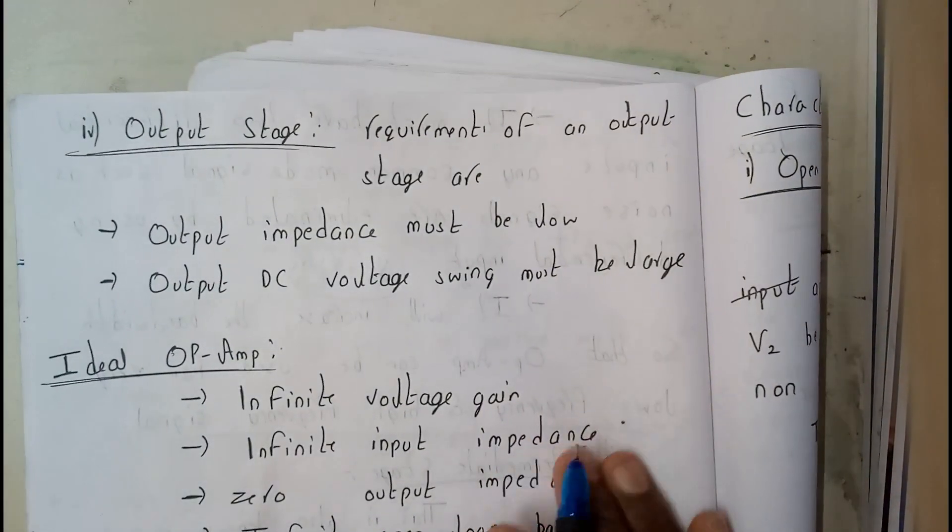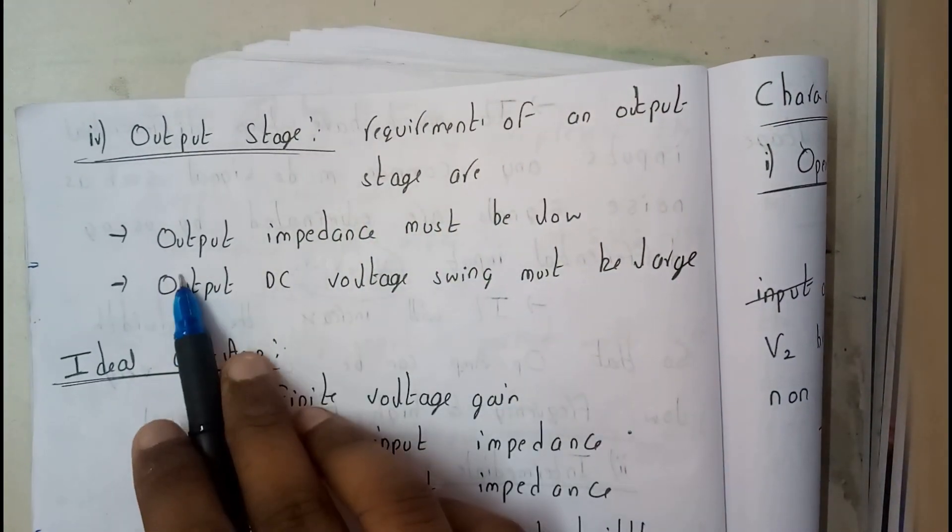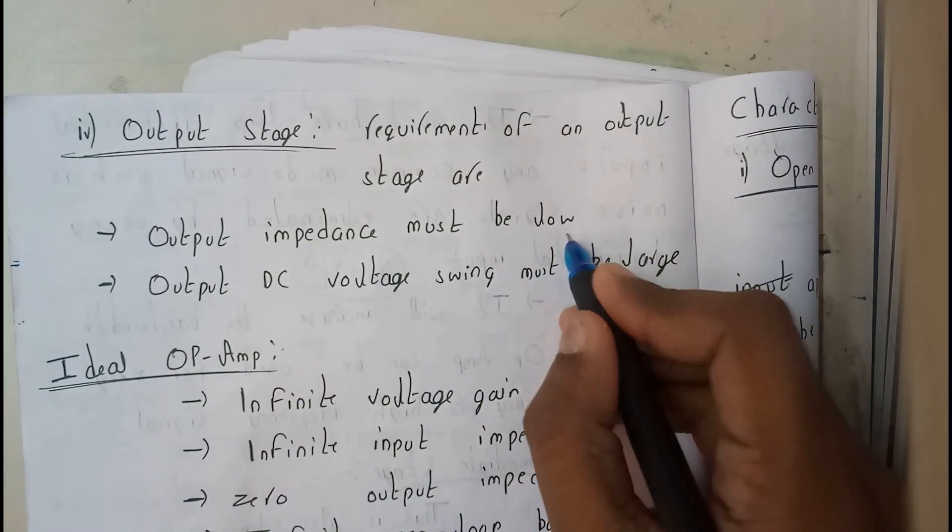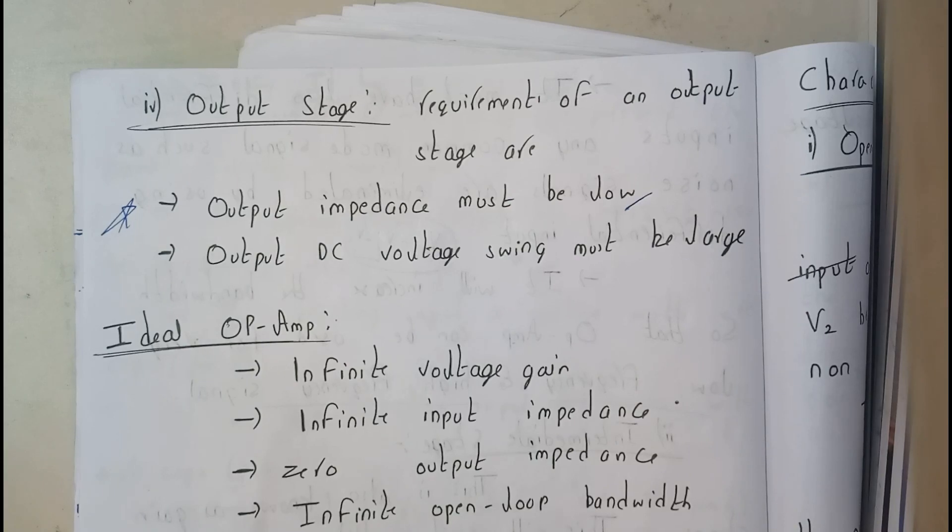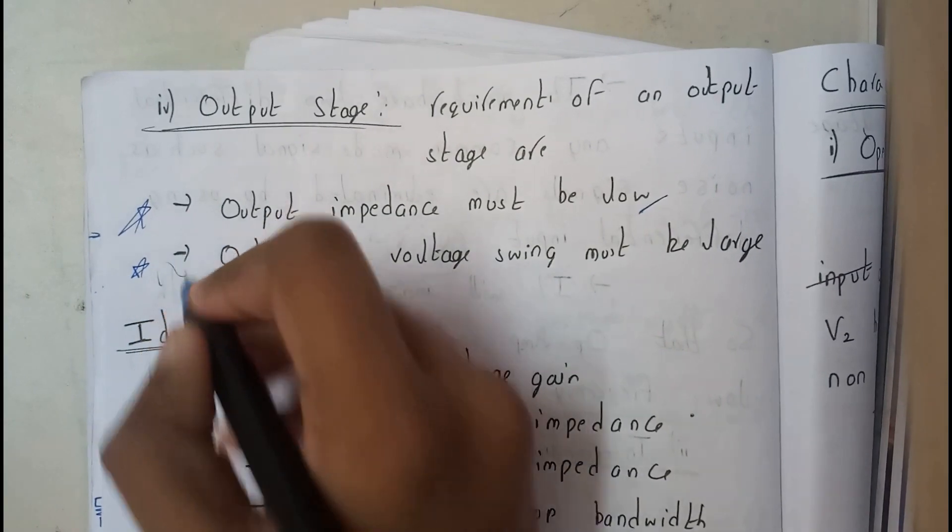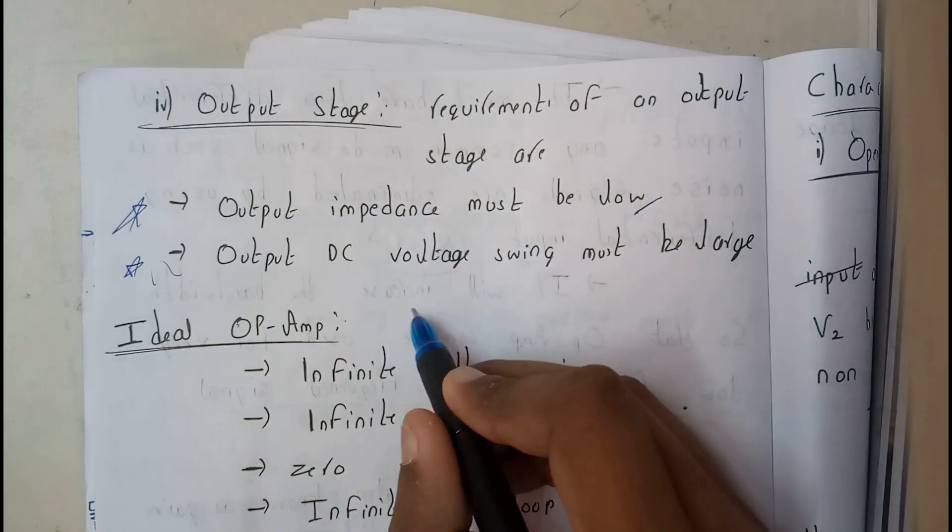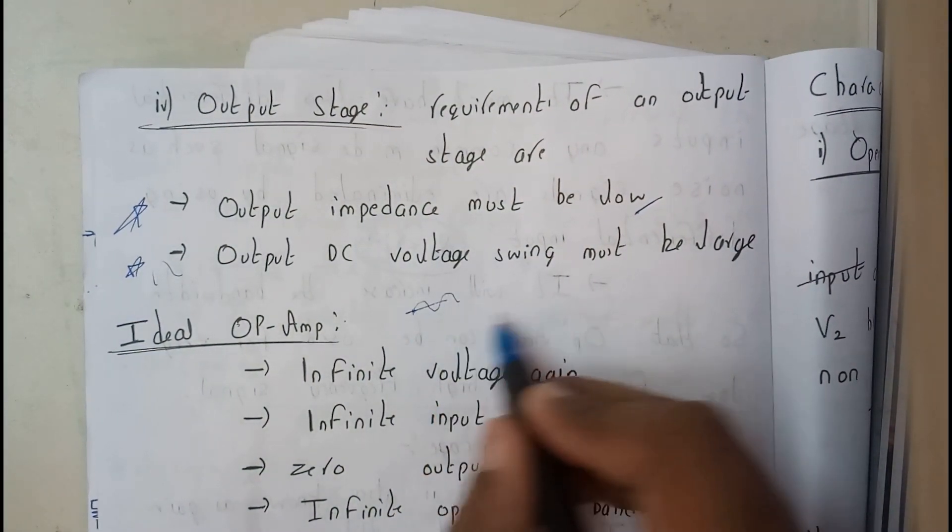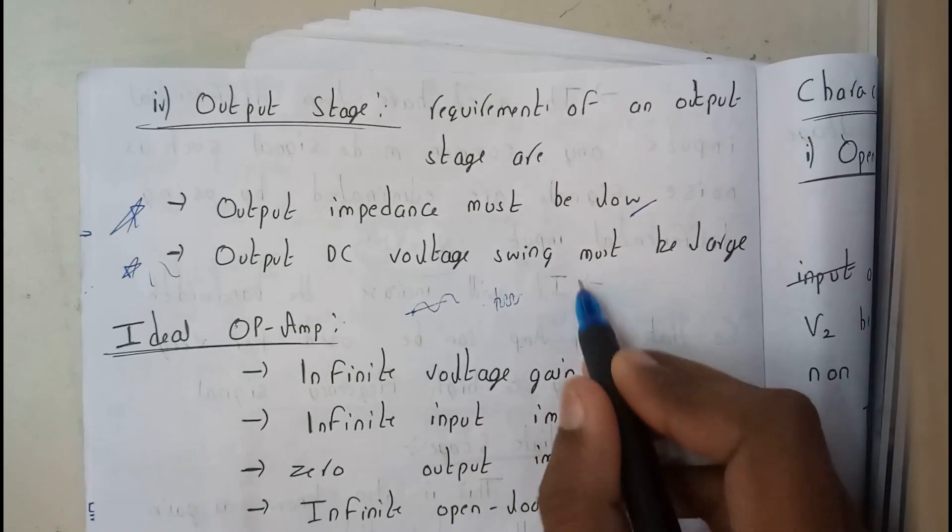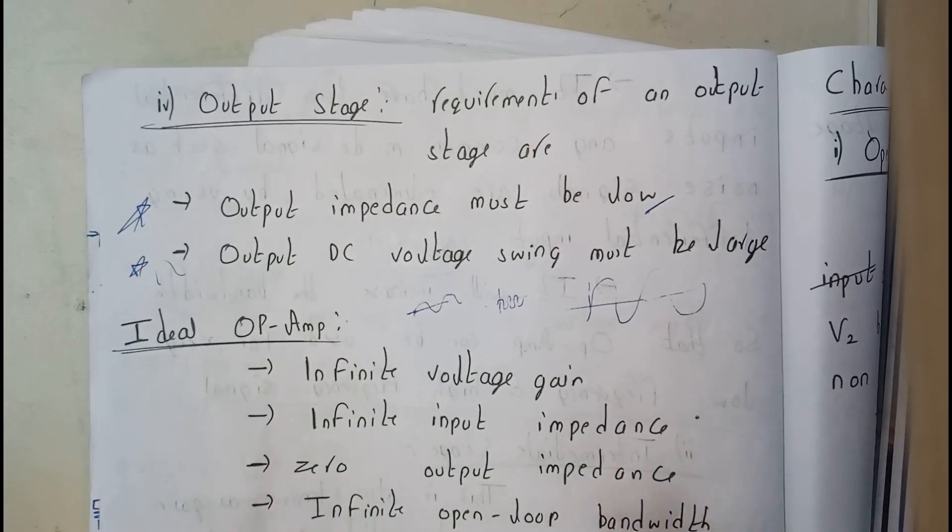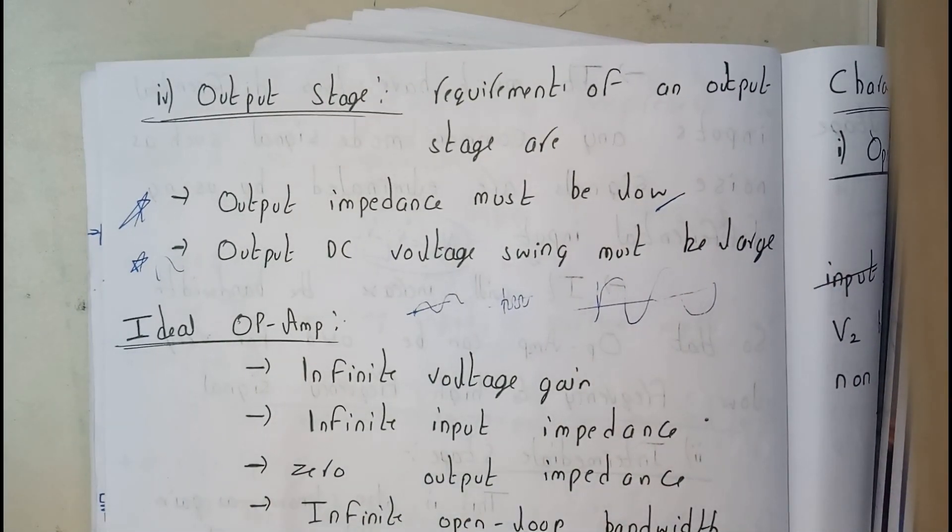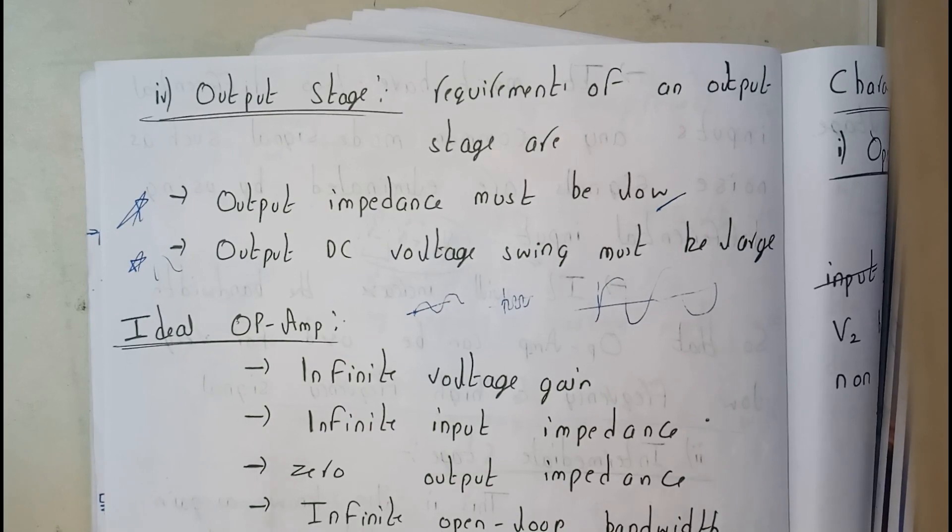Now let us go through the output. Requirements of an output stage are: output impedance must be low guys, that's a most important thing to know. And output DC voltage swing must be large. So the output voltage swing, that is nothing but the sine or cos. If it's given like this small, at the end it should have something like this, it should have a large swing. So that will be the best output. So now I hope everyone got a small idea on the block diagram and its parts.